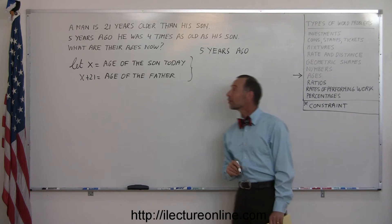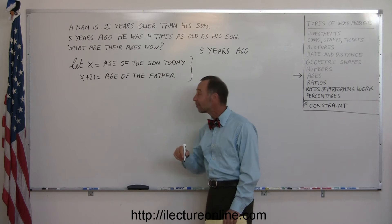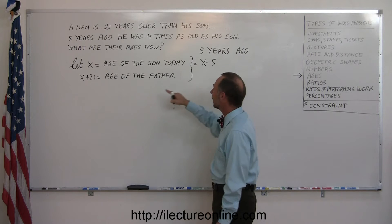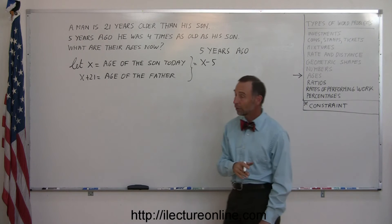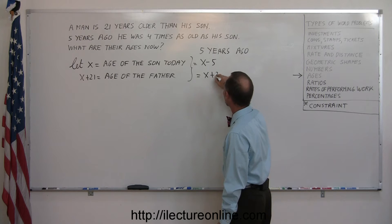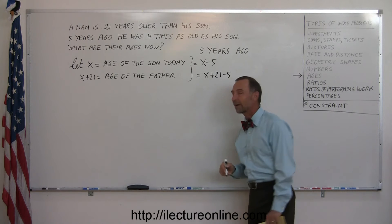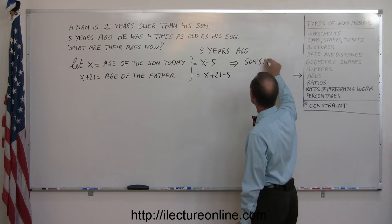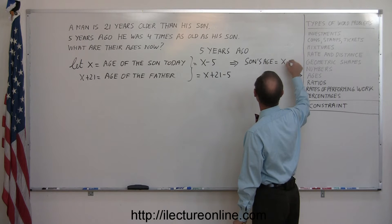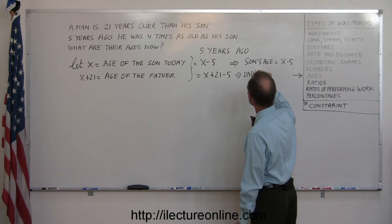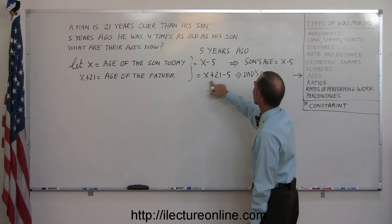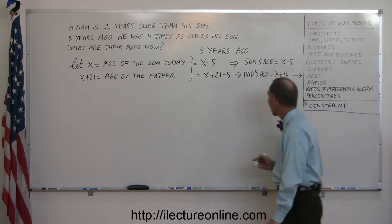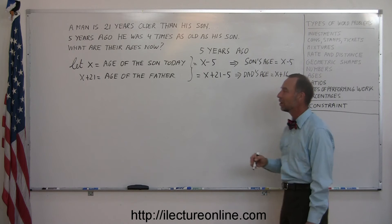Well, they were five years younger five years ago. So if x is the age of the son today, then x minus five is the age of the son five years ago. And for the father, x plus 21 is his current age. So x plus 21 minus five is the age five years ago. So for the son's age, that would be equal to x minus five. And for the dad's age, x plus 21 minus five, or x plus 16. So those are the ages five years ago. And now we're ready to use the constraint to solve the problem.